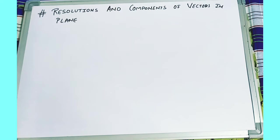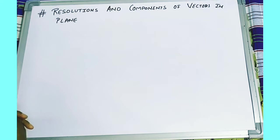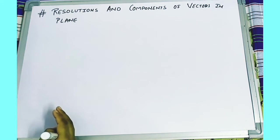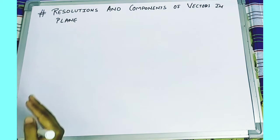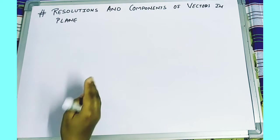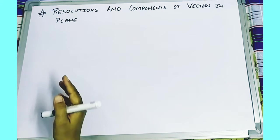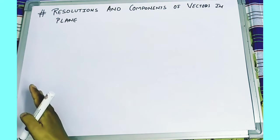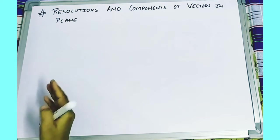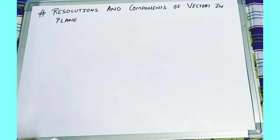Hello students, in this part we are going to learn about the resolution and the components of vectors in the plane. So here we are going to discuss how we are going to resolve the vectors. Resolution is the process of splitting the vectors into two or more components or vectors in such a way that their resultant or combined effect is the same as that of the given vector. The vectors into which the given vector is split are called the components of the vector.